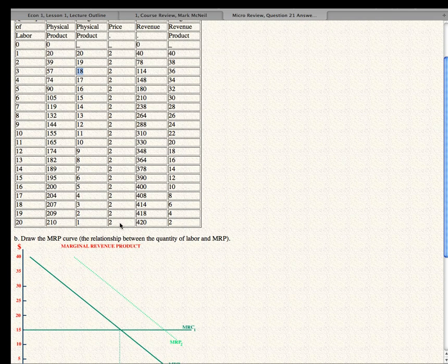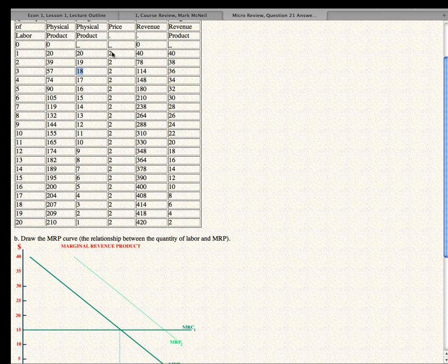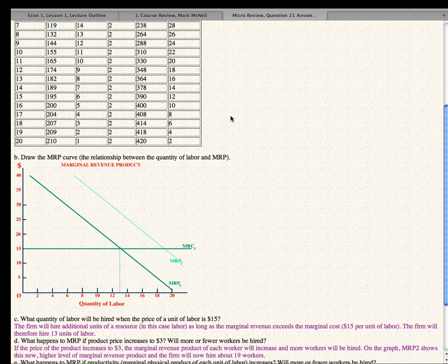What if the price of the product went from $2 to $3 a unit? Well, the first worker, instead of producing a marginal revenue product of $40, would produce $60. And the second would produce whatever three times 38 is, et cetera. And so, at every unit of labor produced, the marginal revenue product would be larger. And so, that would shift the marginal revenue product out as well. In either case, more workers will be hired.